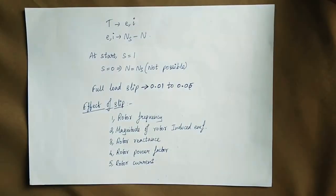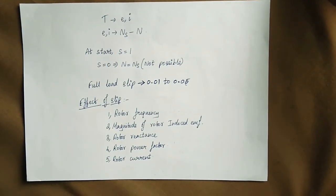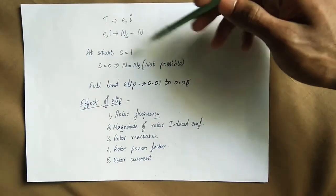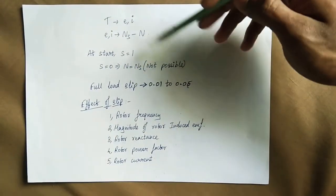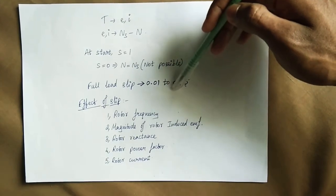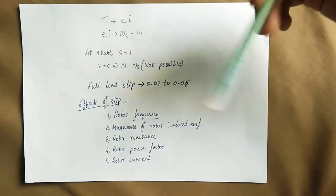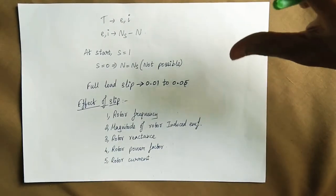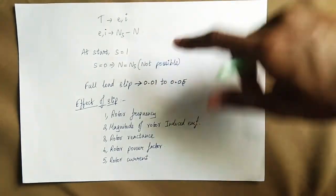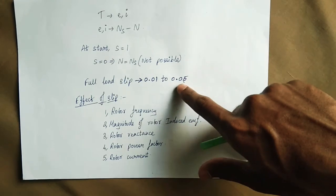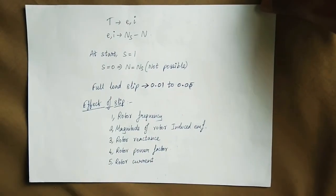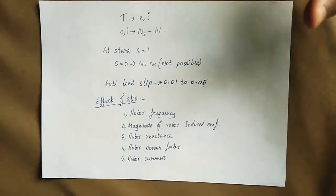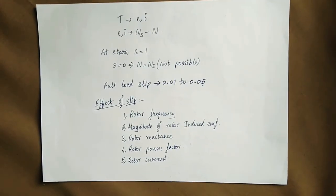At no full load, the rotor transitions slightly. If you have full load, the speed will decrease. The typical slip range is 0.01 to 0.05. The effect of slip causes changes in the induction motor's performance.